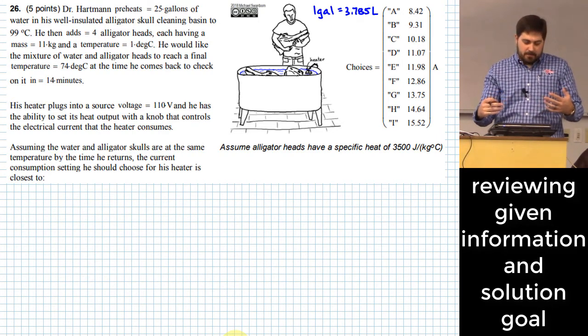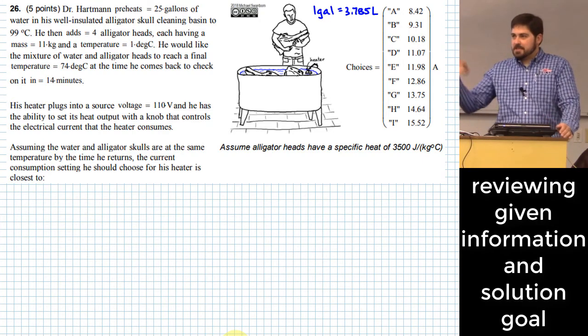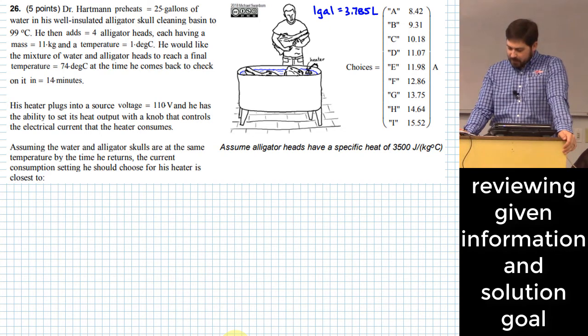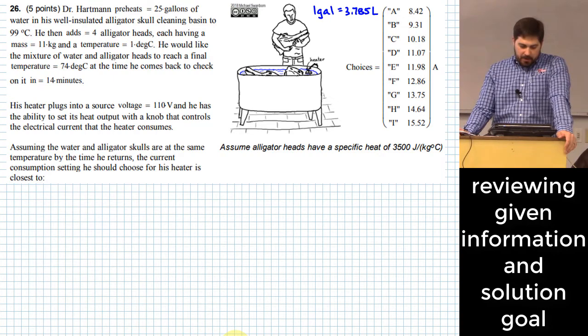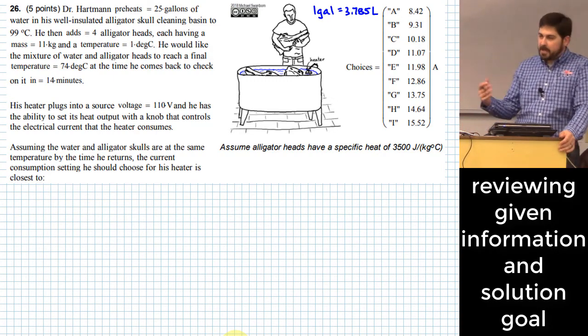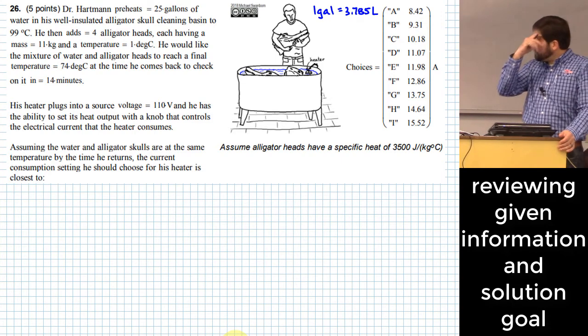We won't question that assumption, but since it's given to us, we'll just go with that assumption. Real life, that probably wouldn't happen, but let's say that that happens. What we want to know is what current consumption setting should he choose for the heater so that he makes this final temperature that he's looking for.